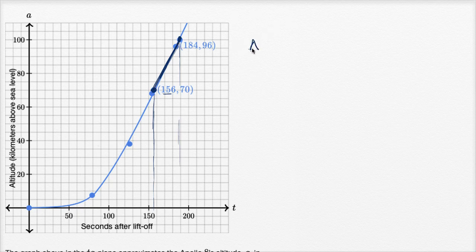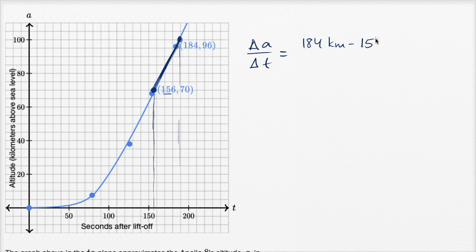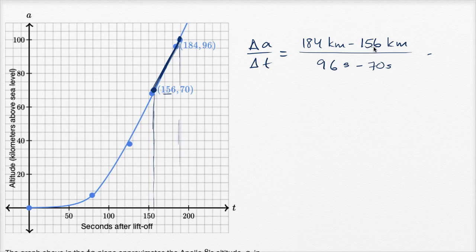What's the slope of that line? It's going to be change in altitude over change in time. Change in altitude is 96 minus 70 kilometers, and change in time is 184 minus 156 seconds. 96 minus 70 is 26 kilometers, and 184 minus 156 is 28 seconds. So this gives us 26 kilometers over 28 seconds.